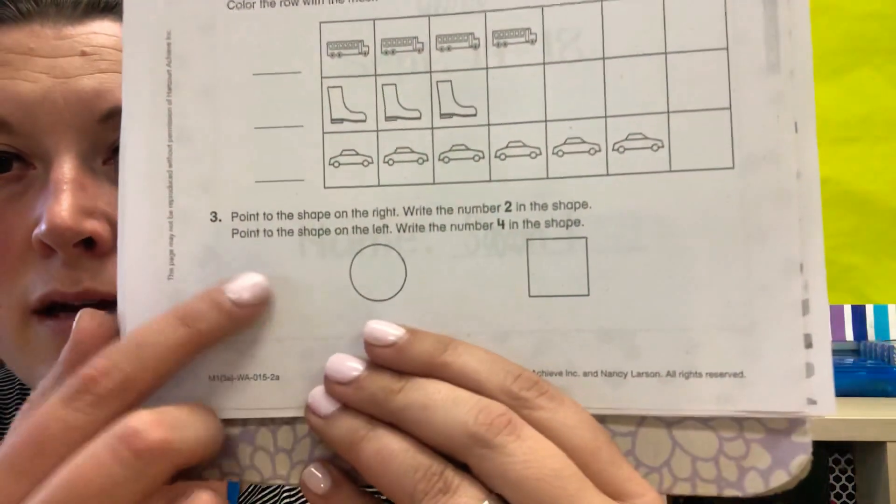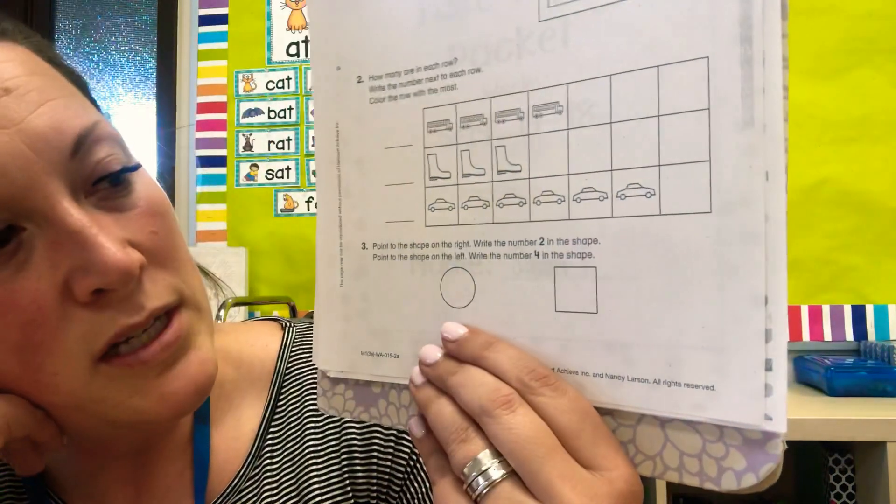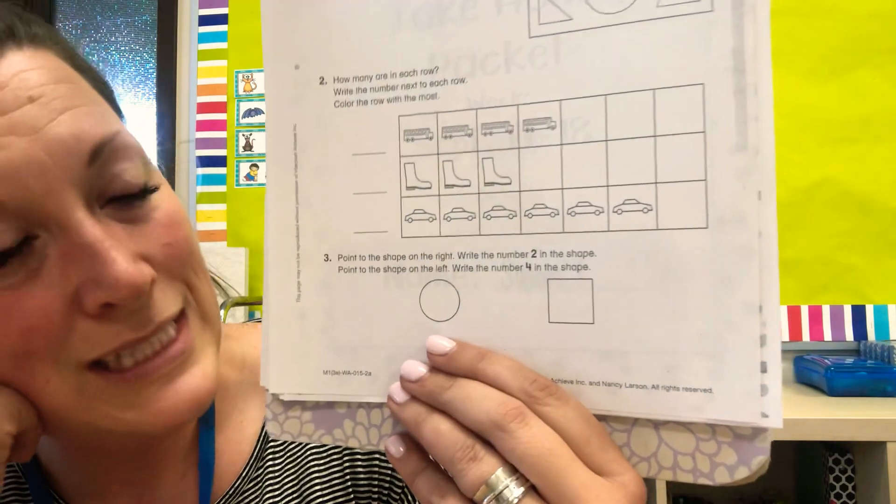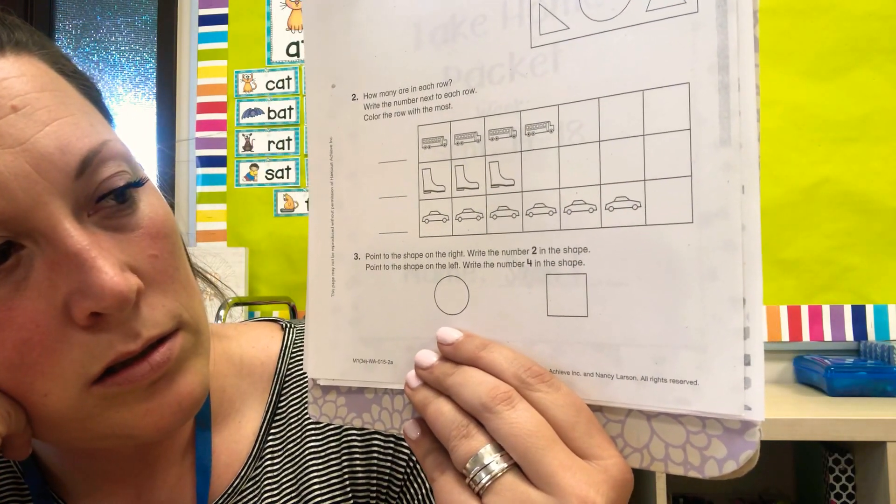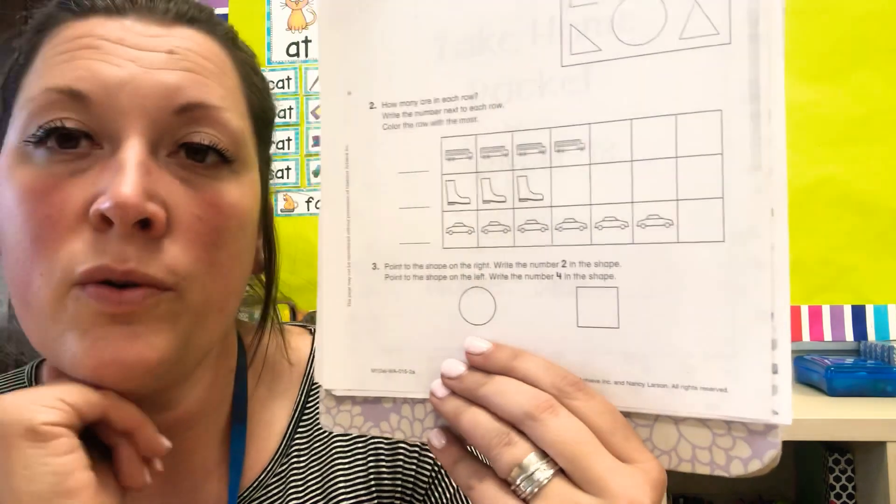Number three. Right here. Point to the shape on the right. Write the number two in that shape.